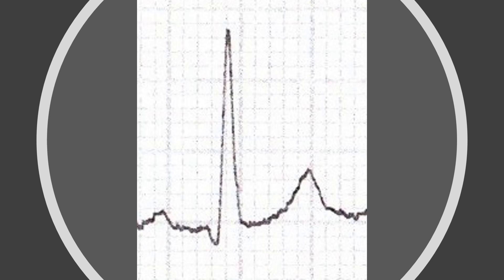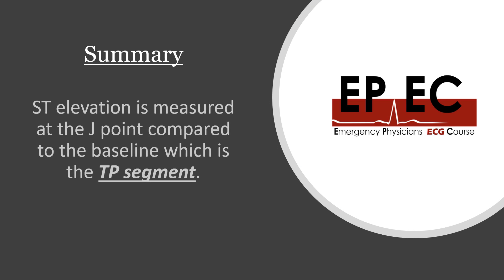If you apply this to the complex we've just seen, you'll find that this is your baseline, and you actually have an ST depression and a PR depression. If you use the PR segment as your baseline, you will incorrectly call this an ST elevation — and that is a significant clinical error you don't want to make. In summary, ST elevation is measured at the J point compared to the baseline, and the most important thing to remember is that the baseline is the TP segment, not the PR segment.